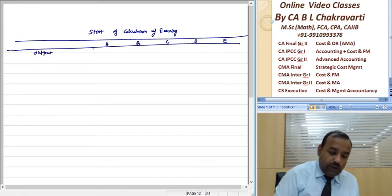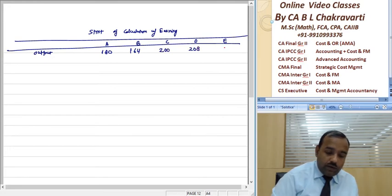The output for A is 180, B is 164, C is 200, D is 208 and E is 130.